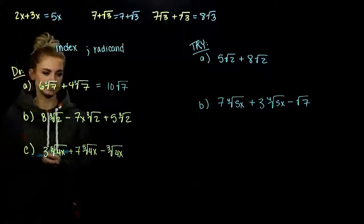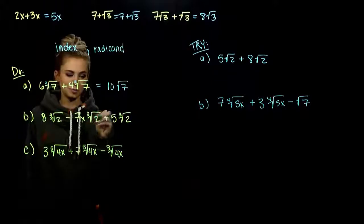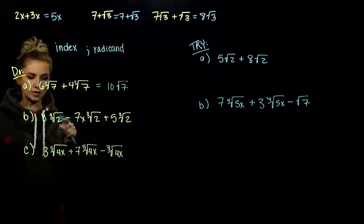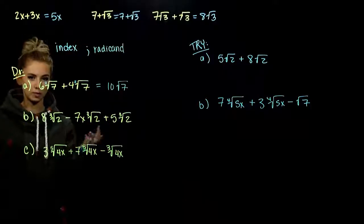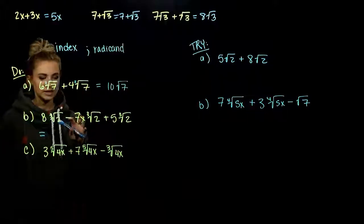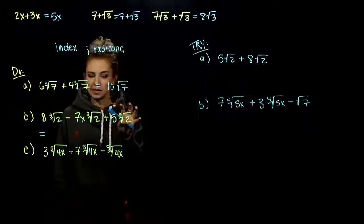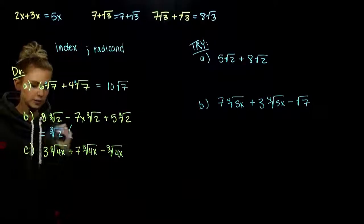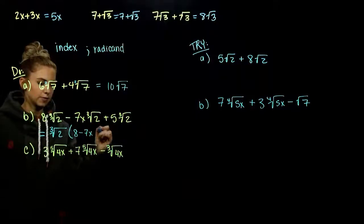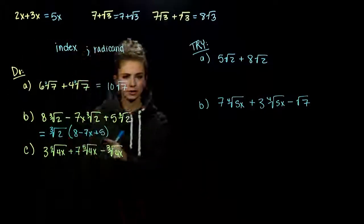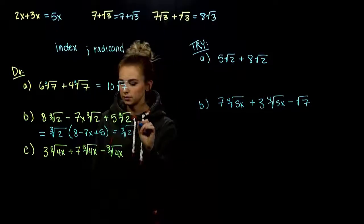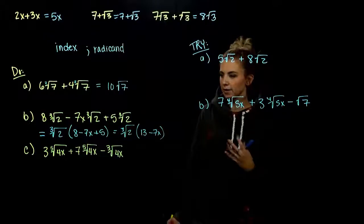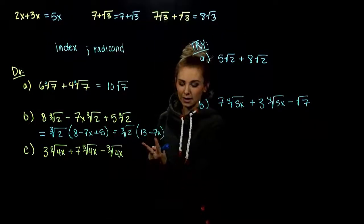Part B: we've got the same index everywhere and the same radicand, but what we're combining — 8, negative 7x, and positive 5 — these aren't all like terms. The two on the ends match, but the middle one won't combine with them. A helpful way to look at this: what do all three terms have in common? That radical, the third root of 2. Factoring it out leaves 8 minus 7x plus 5 inside, and combining 8 and 5 gives the third root of 2 times (13 minus 7x). Not everything will always combine.